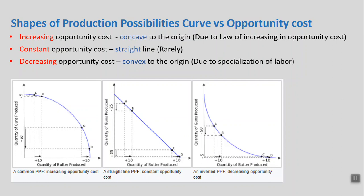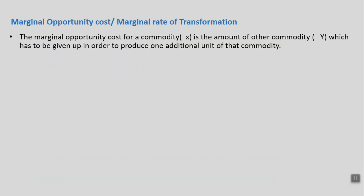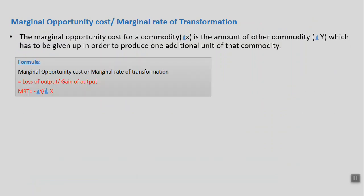Now let's move to the last concept of this topic: marginal opportunity cost, also called the marginal rate of transformation. The marginal opportunity cost for a commodity is the amount of another commodity Y which has to be given up in order to produce one additional unit of that commodity. Marginal means additional — for any additional unit of commodity X you want to produce, you have to sacrifice something of commodity Y. We call it the marginal rate of transformation because we are transforming the sacrifice into another product.